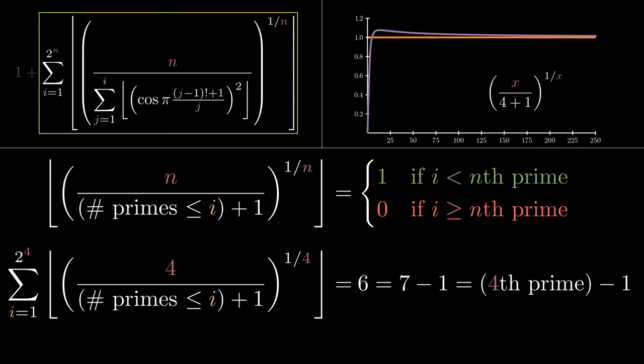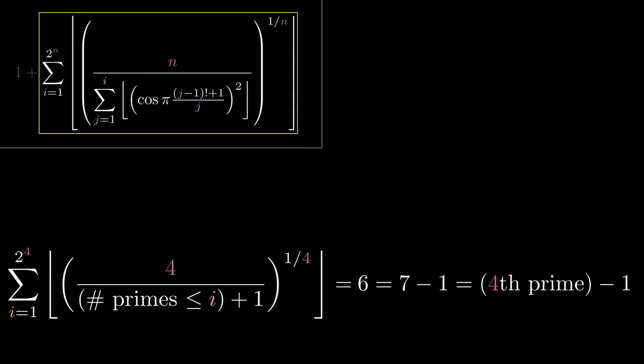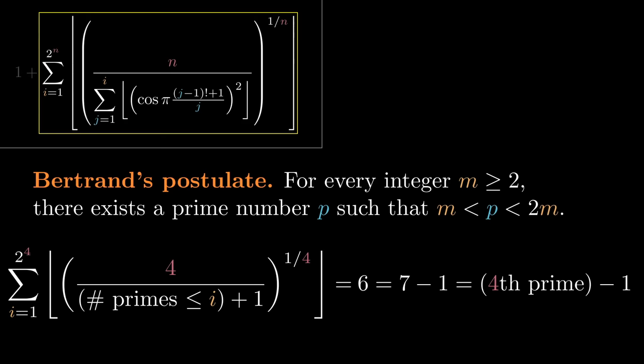But why is it enough to stop the sum at 16? Well, we need to go high enough to guarantee that we go above the nth prime. Of course, we're trying to compute the nth prime, so we don't know exactly how high that is. A very rough estimate is provided by Bertrand's postulate, which was conjectured by Bertrand in 1845, and proved a few years later by Chebyshev. It says that for every integer m greater than or equal to 2, there exists a prime number p between m and 2m. That means that there's a prime between 2 and 4, another prime between 4 and 8, another prime between 8 and 16, and so on. Since 2 is prime itself, Bertrand's postulate guarantees n primes between 1 and 2 to the n. So the nth prime is somewhere less than 2 to the n.